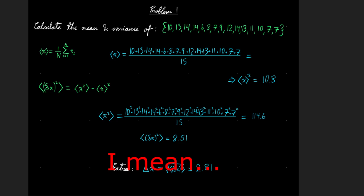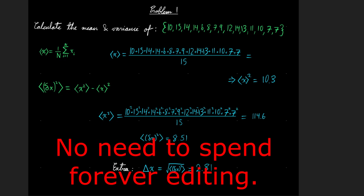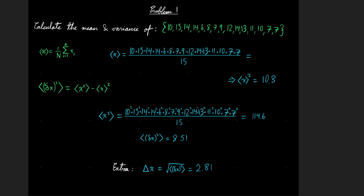Welcome to the solutions to all the problems that I gave in the chapter one lecture for quantum mechanics theory and experiment. Starting with problem one, you just had to calculate the mean and the variance of this data set.